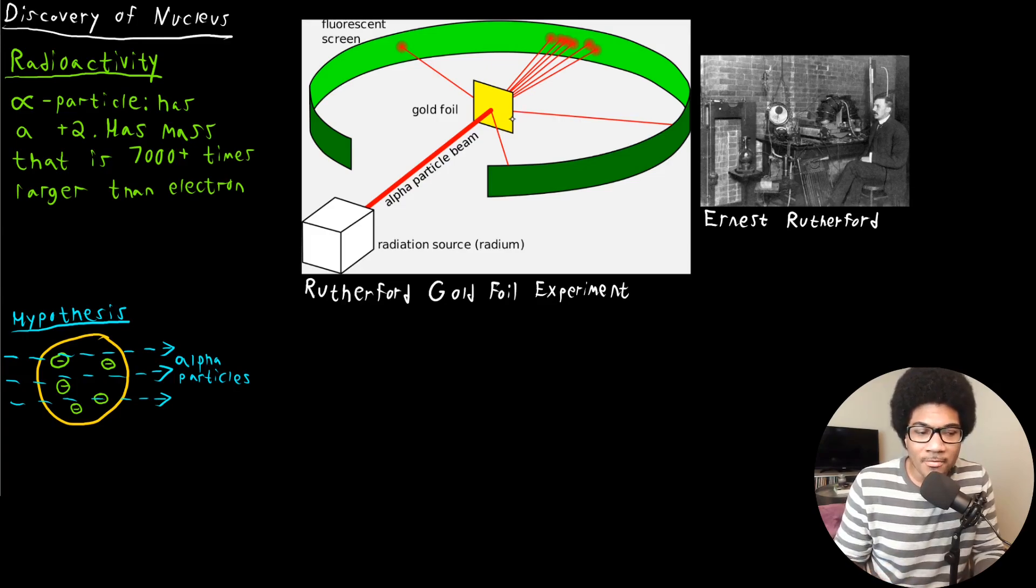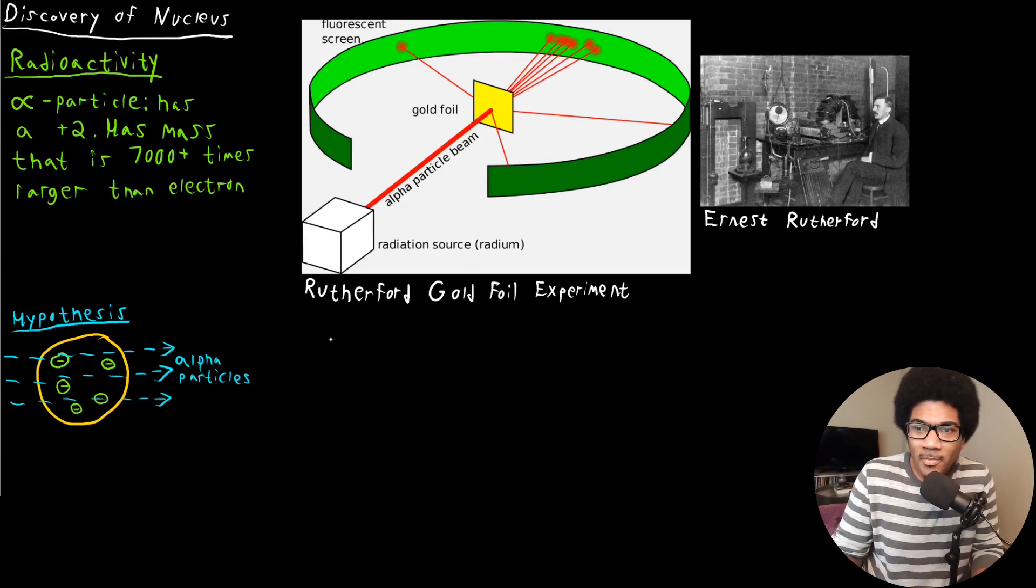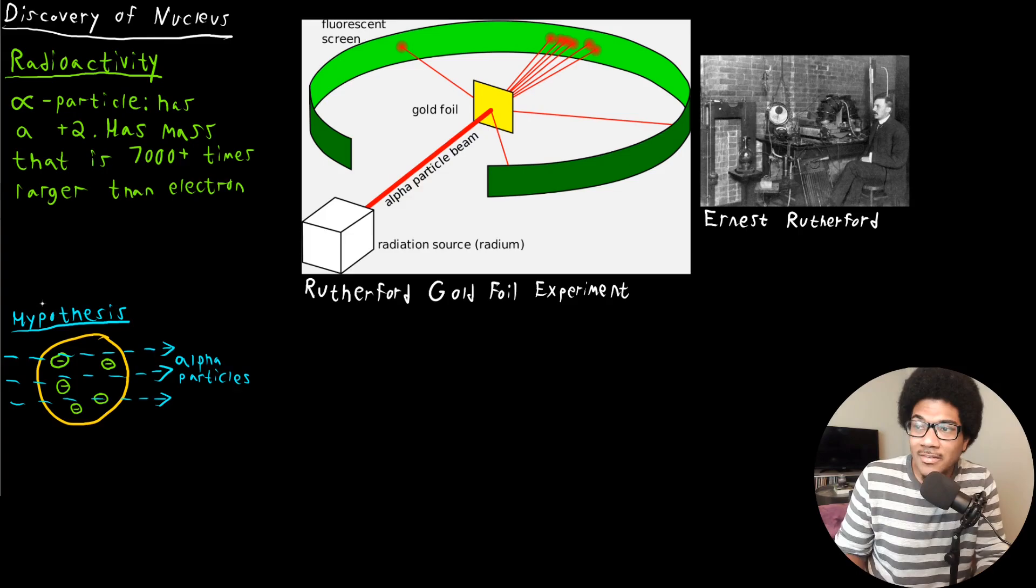In fact, Rutherford was so flabbergasted by this. He called it the most amazing thing he ever saw. And in fact, he used the analogy of saying, imagine if you shot a shotgun shell at tissue and one of the shotgun shells came back at you. I mean, that was how surprising this deflection of alpha particles in the gold foil experiment was. So he had to come up with some way to explain why this was happening. It was clear from this result that the model for the atom had to be refined in some way.